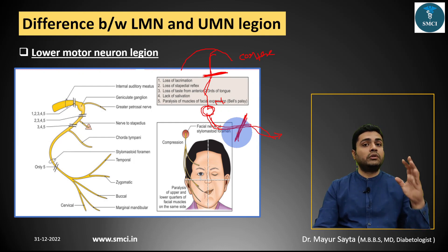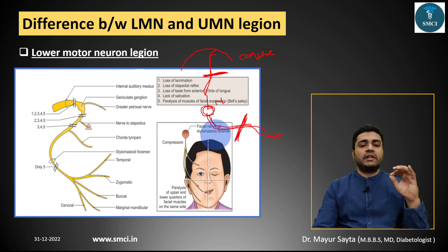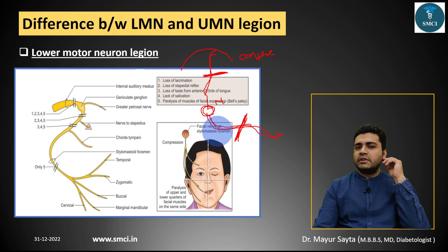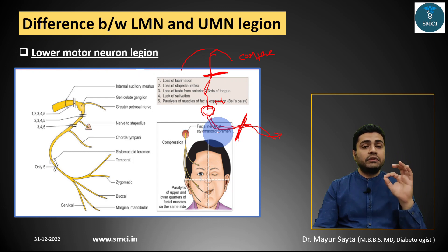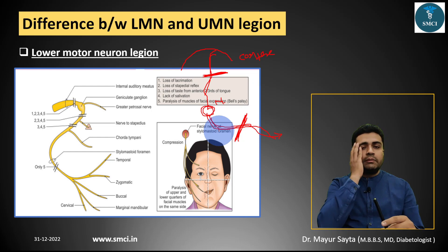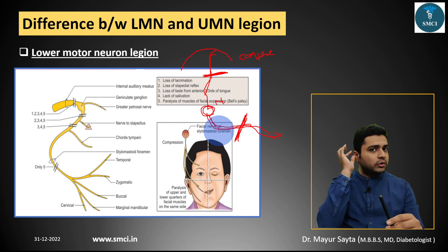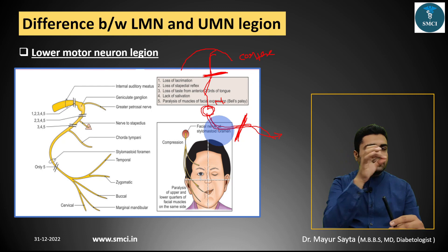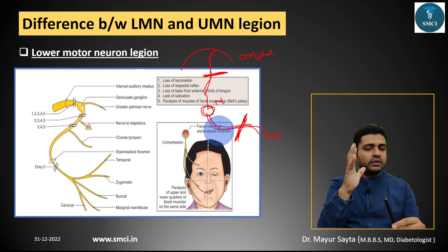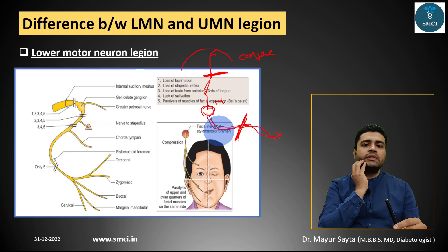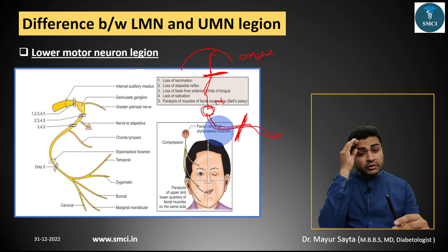Within lower motor neuron lesions, features depend on the level. First, if the nerve is damaged at the level of the stylomastoid foramen, that is Bell's palsy. Here, because lower motor neurons do not cross, they supply the same side. So damage on the right side affects the right facial muscles. The orbicularis oculi, frontalis — causing loss of forehead wrinkles — and eye closure muscles are all affected.